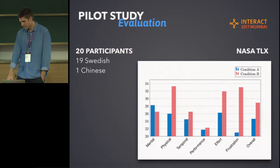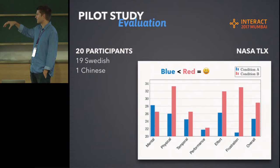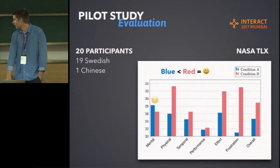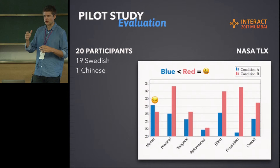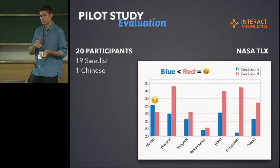We analyzed this using the NASA TLX workload scale, with 20 participants — mostly Swedish this time. In the graph, if the blue bar is lower than red, we are happy. We were better in most cases except for mental demand — the standard version required users only to remember how to open the menu and then do the same steps each time, rather than remembering an individual gesture for each action.